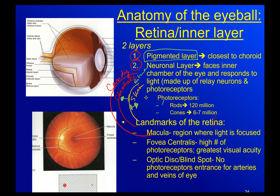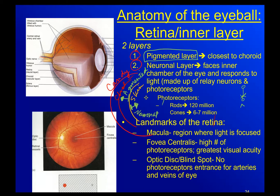In the neuronal layer, you actually have three layers of cells. You've got some cells here, some cells in the middle, and then these specialized cells. This layer of cells are the photoreceptors. These layers of cells are called the relay neurons.